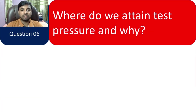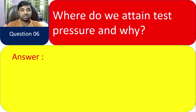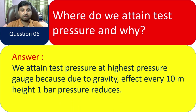Question 6: Where do we attain test pressure and why? We attain test pressure at the highest pressure gauge, because due to gravity, every 10 meters of height reduces 1 bar of pressure. That is why we have to check at the highest pressure gauge — because of the effect of gravity.